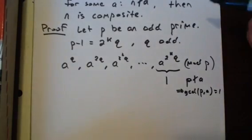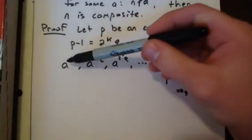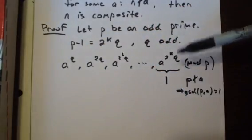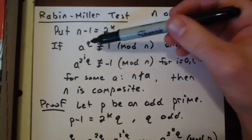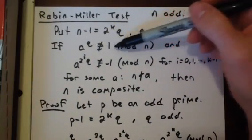So there's basically two different cases that can happen. Either the first number is 1, and then they're all 1, in which case we are done. Because then we would have a to the q is congruent to 1 mod n.